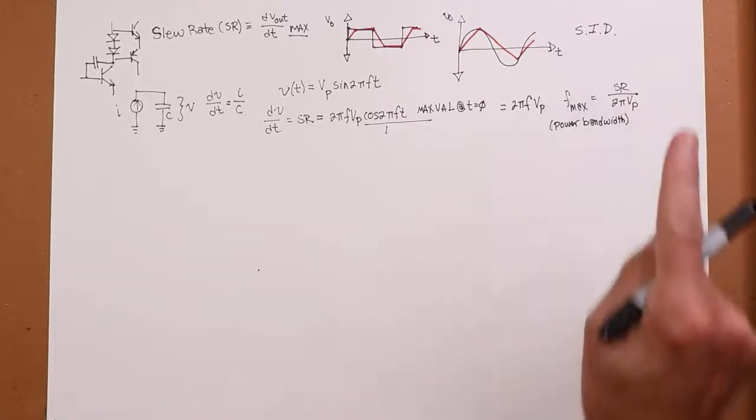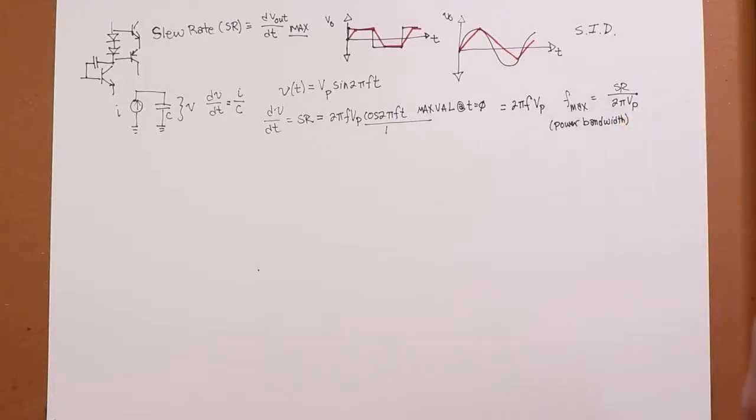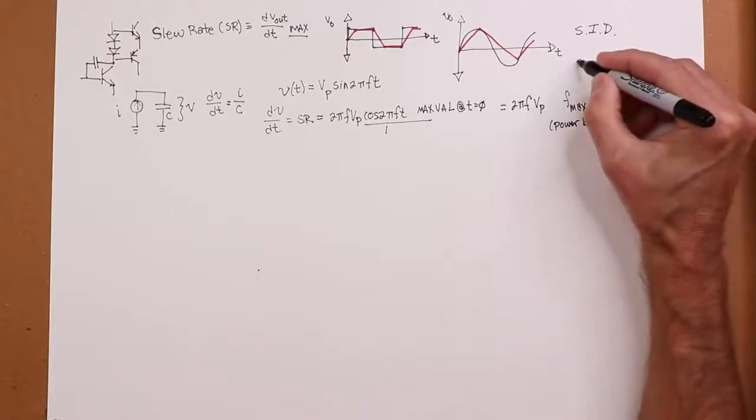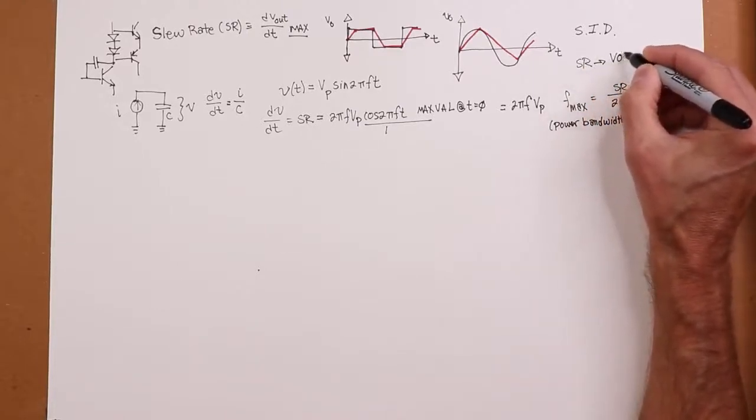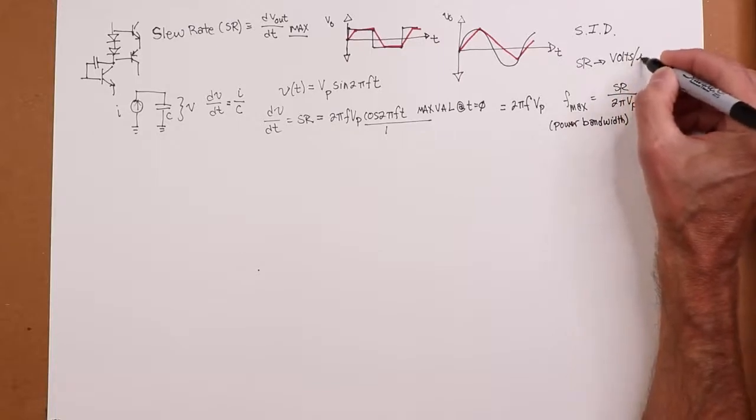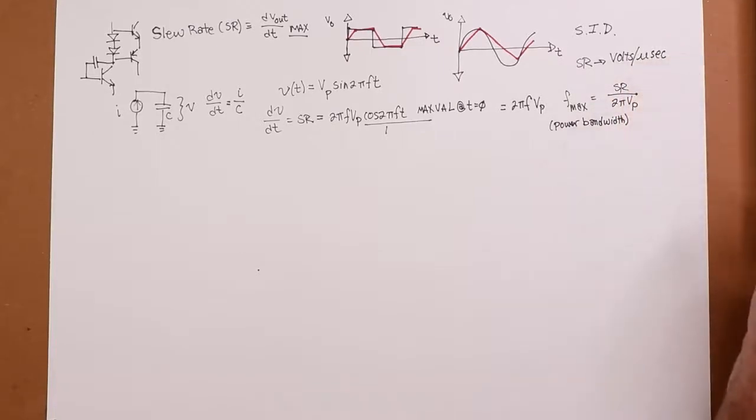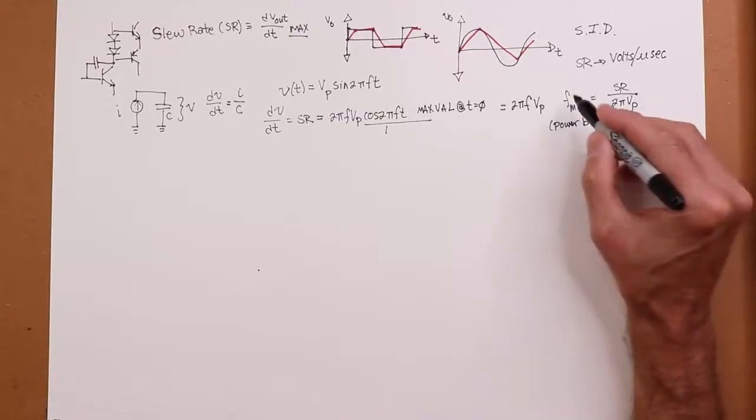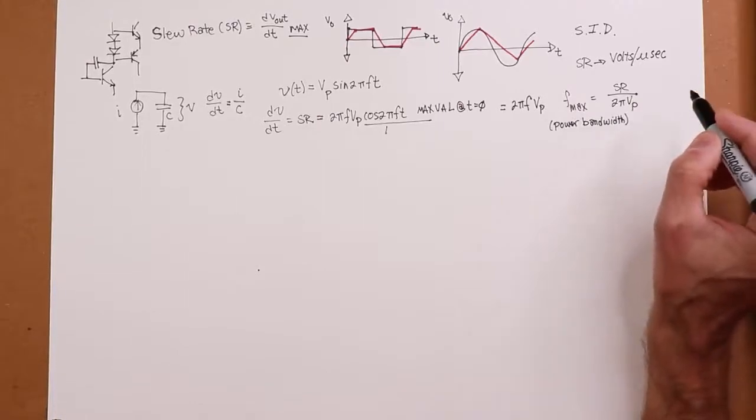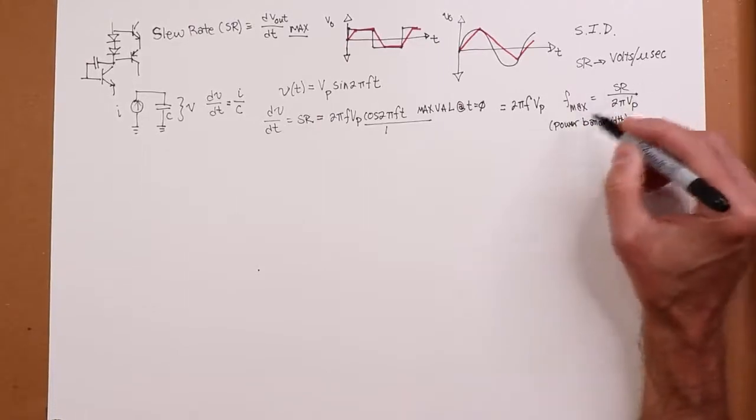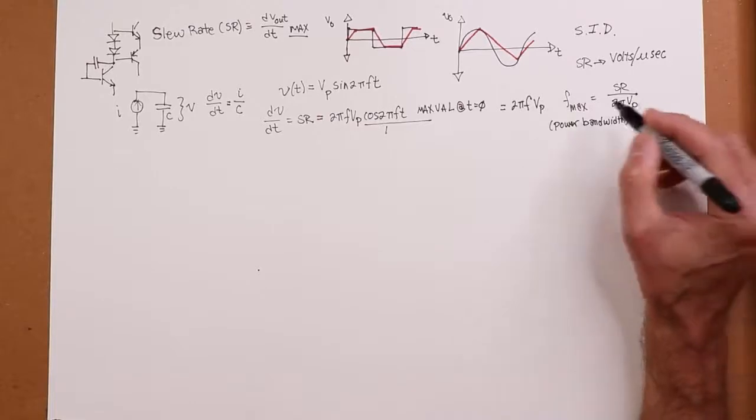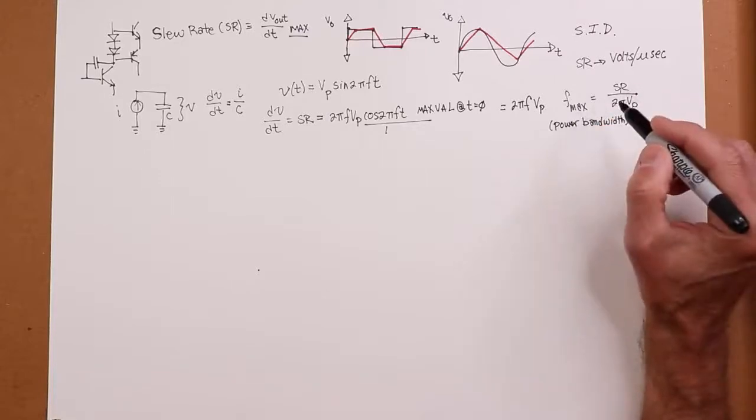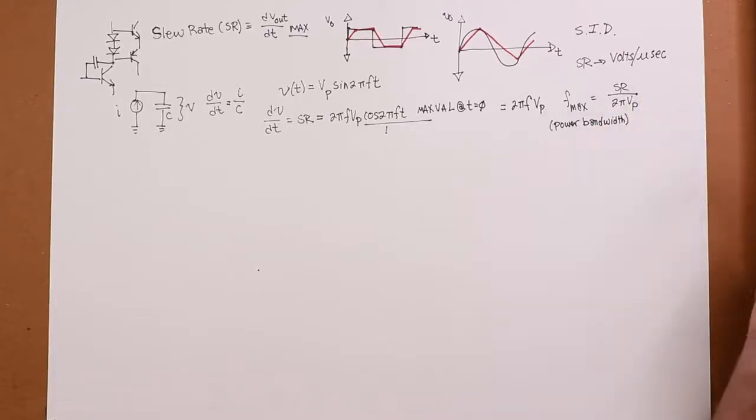One little trick to remember, slew rate on a data sheet, 99% of the time, is spec'd as volts per microsecond, not volts per second. You have to remember to do that conversion. If you leave it as volts per microsecond, you're going to get an f max in megahertz, because that micro is going to flip over into megs. So, you either convert it into volts per second, so that you get hertz, or you just remember that your answer is in megahertz, your choice.